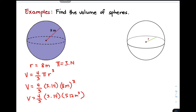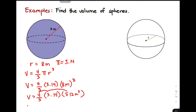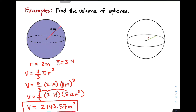Multiply 4 by 3.14, then multiply their product by 512. You can use your calculator or multiply manually. Their product is 6,430.72, then divide it by 3 because we have 3 as our denominator. That gives us the volume of 2,143.57 meters cubed, rounded to two decimal places. This is the volume for item number 1, the sphere with a radius of 8 meters.